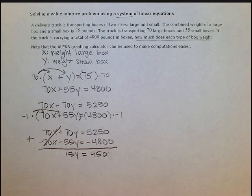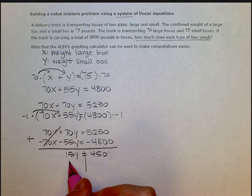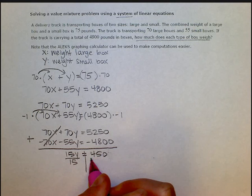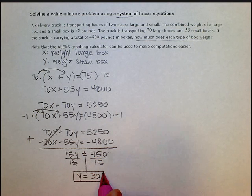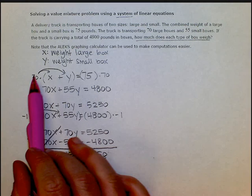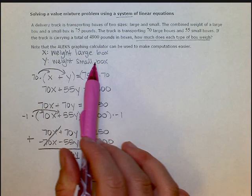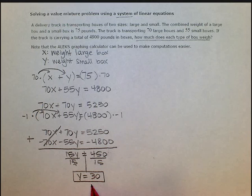Now I just need to solve for y. So I divide both sides by 15, and I get y equals 30. y equals 30, which y represented the weight of a small box, so a small box weighs 30 pounds.